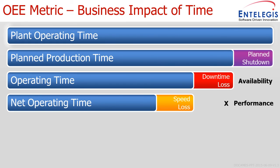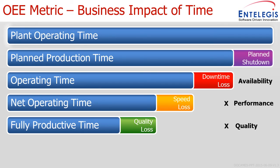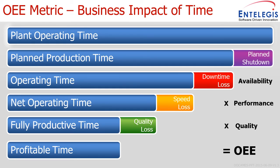Of that planned production time, anything that wasn't planned downtime would be considered our operating time. Due to low availability, some losses will be introduced — that is essentially your availability metric. Of that subset, which is your net operating time, not all machines will run 100% of their capability, so speed losses are introduced — giving us a performance metric. From the resulting fully productive time, any quality losses introduced — perhaps from running too quickly at various points in the line — give us a quality metric. When all three are combined, we arrive at profitable time: the total amount of time where we have a good-quality product that can actually be sold to a customer.